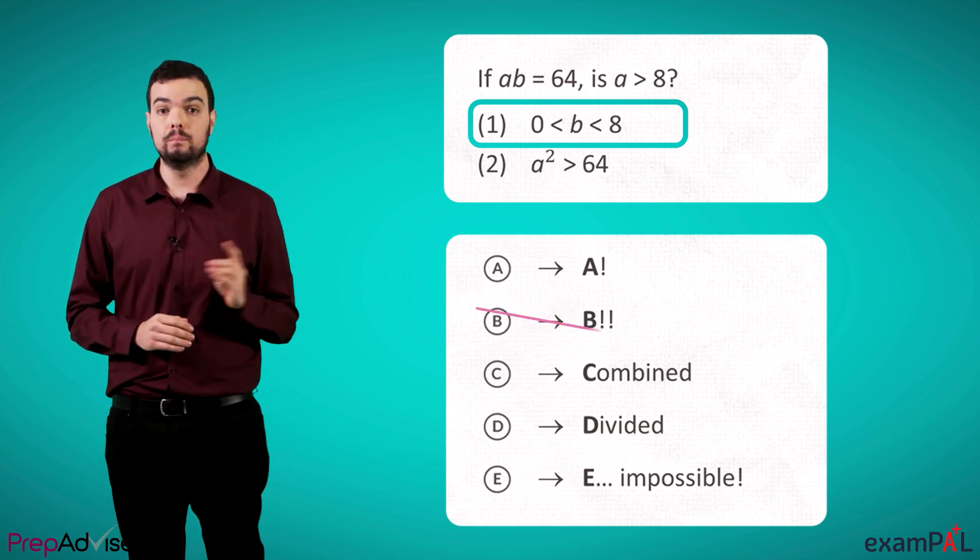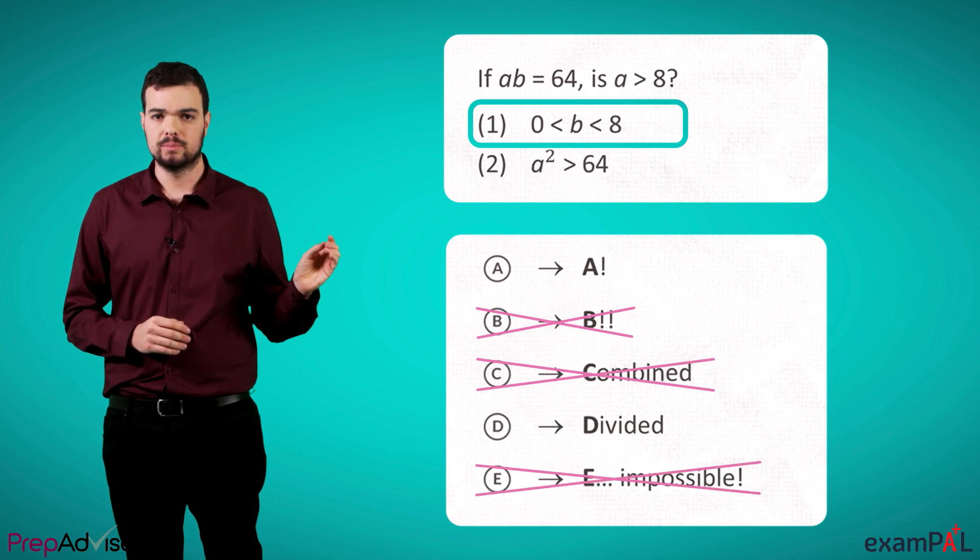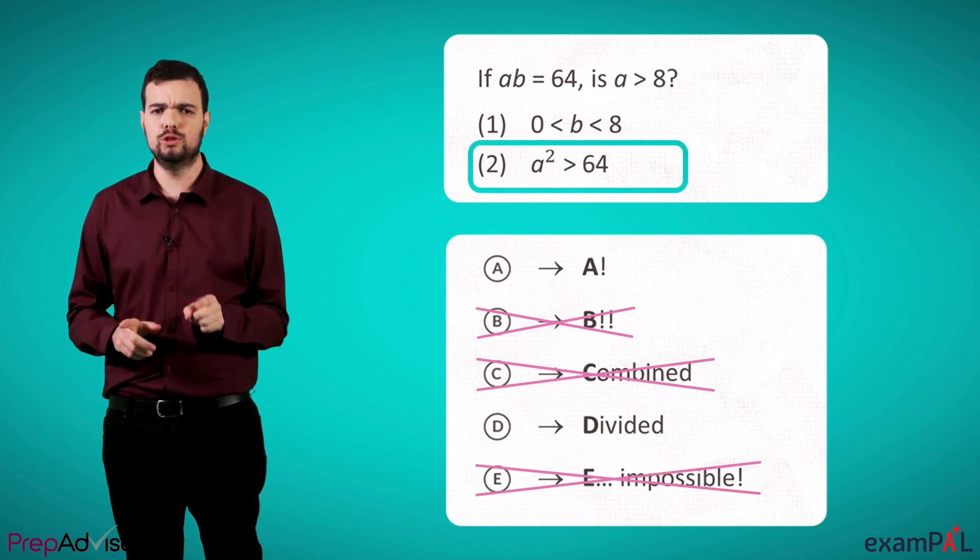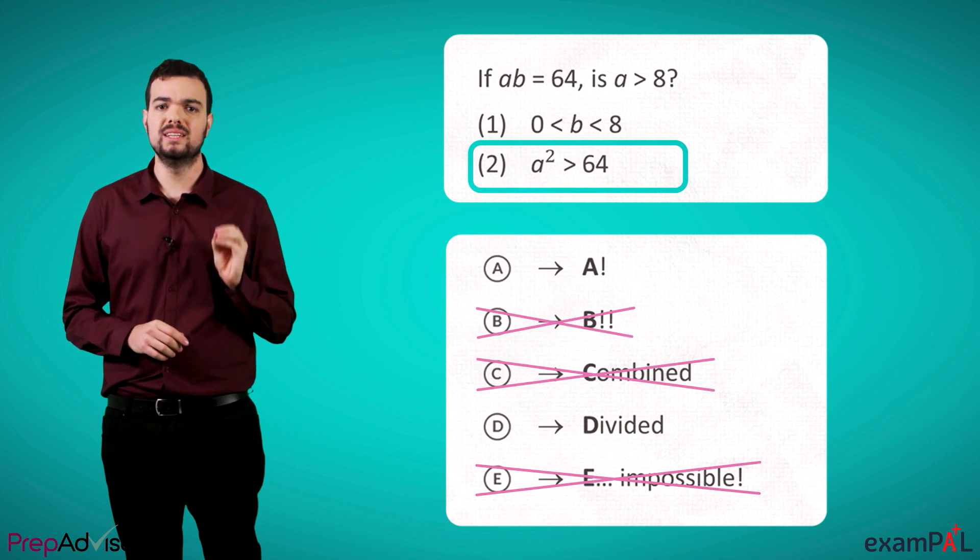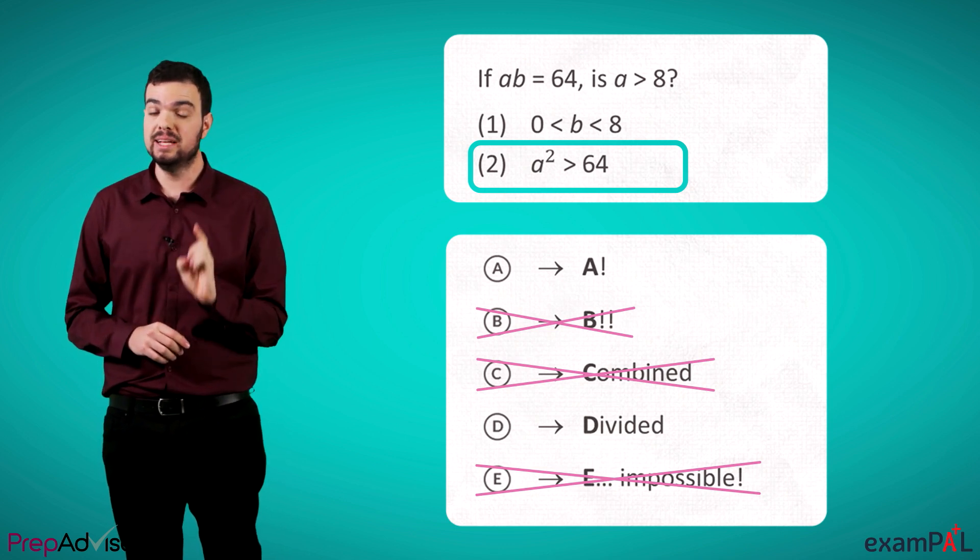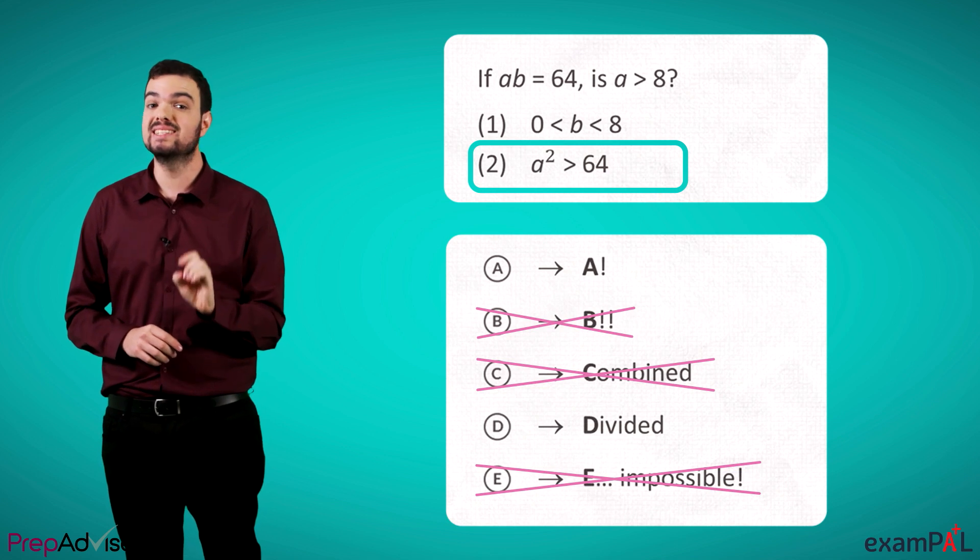Meaning we'll cross out B, C, and E. Now let's look at statement 2. a squared is larger than 64. Now, we must remember to ignore the information in statement 1 and look at this on its own.